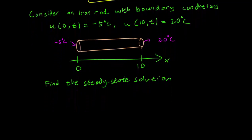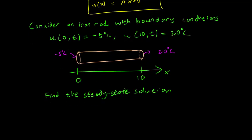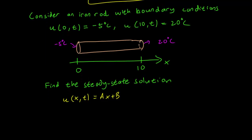So let's look at this problem. We consider an iron rod with boundary conditions u(0,t) equals minus 5 celsius and u(10,t) equals 20 celsius. So the left end of the rod is set at minus 5 degrees, and the right end of the rod is set at 20 degrees for all time. And we're asked to find the steady state solution. So we already know that our steady state solution is going to be of the form ax plus b. And all that remains is to figure out what a and b are, which we can find by plugging in the boundary conditions.